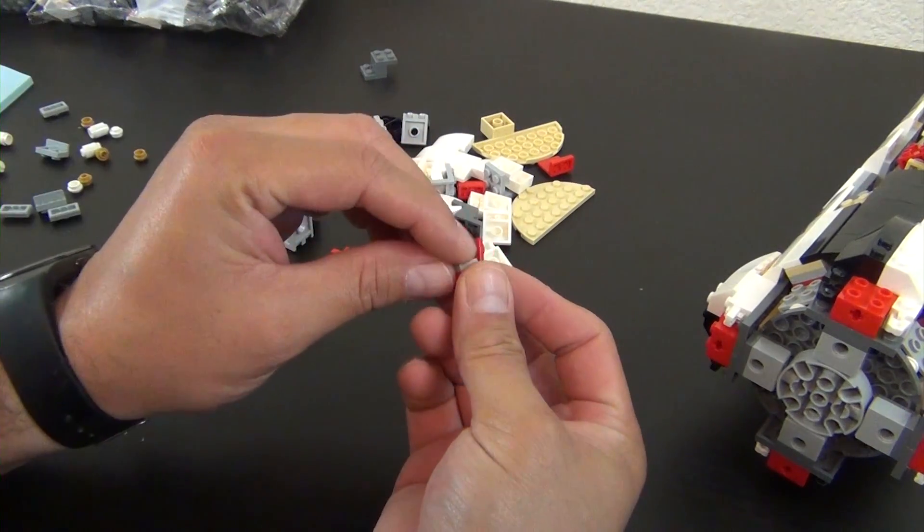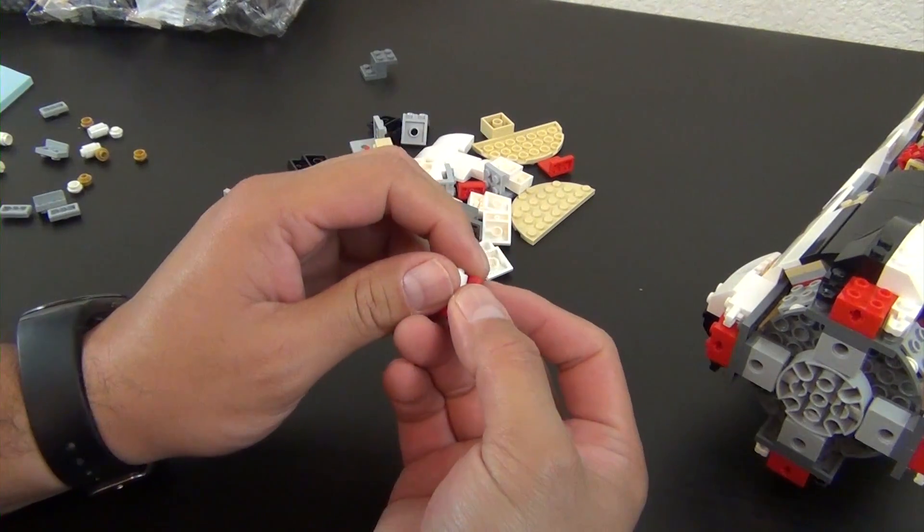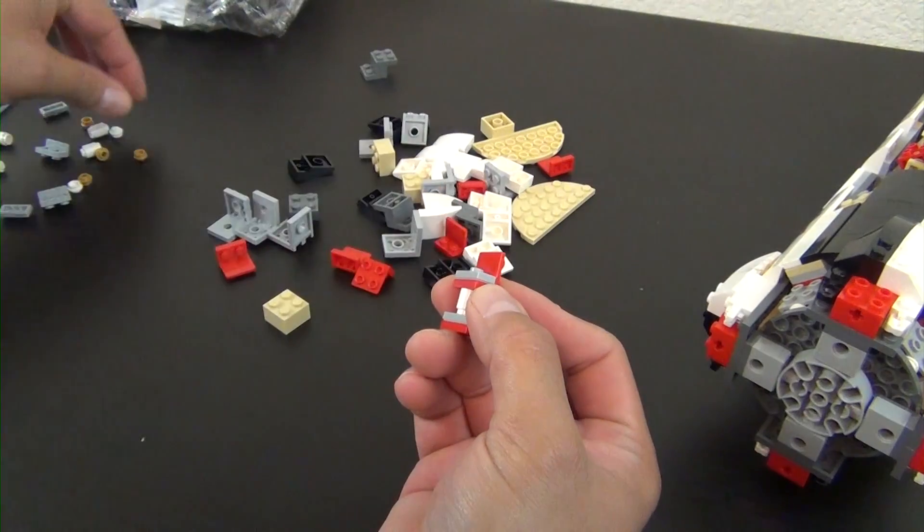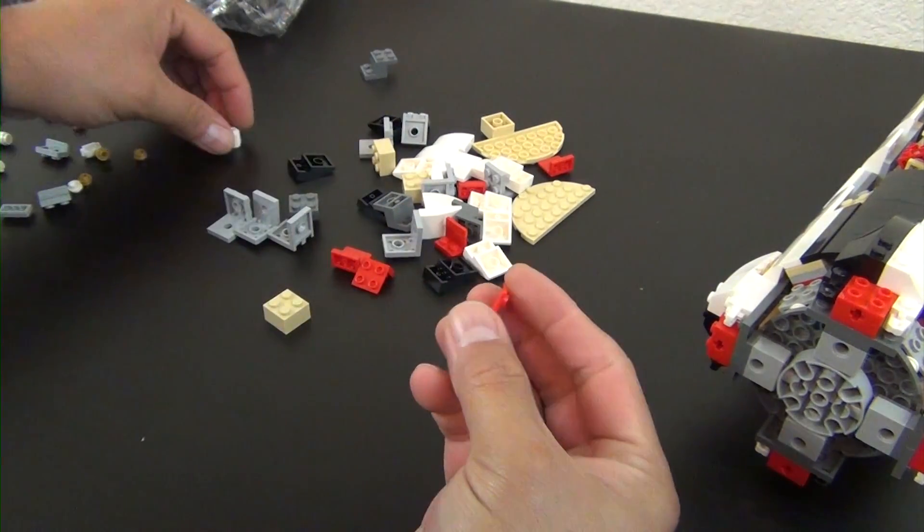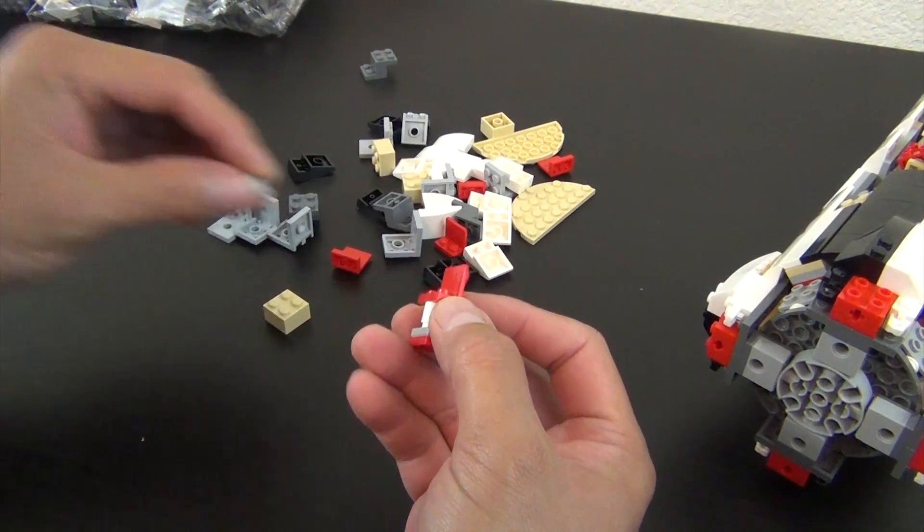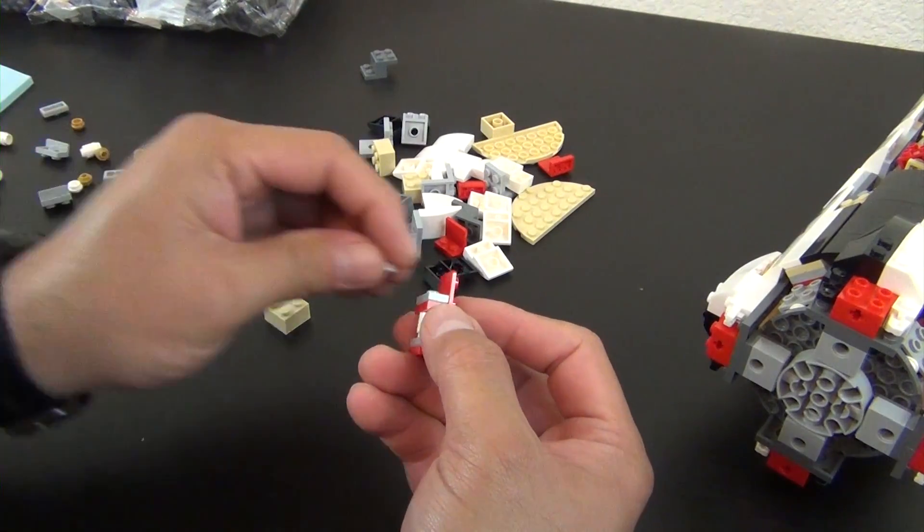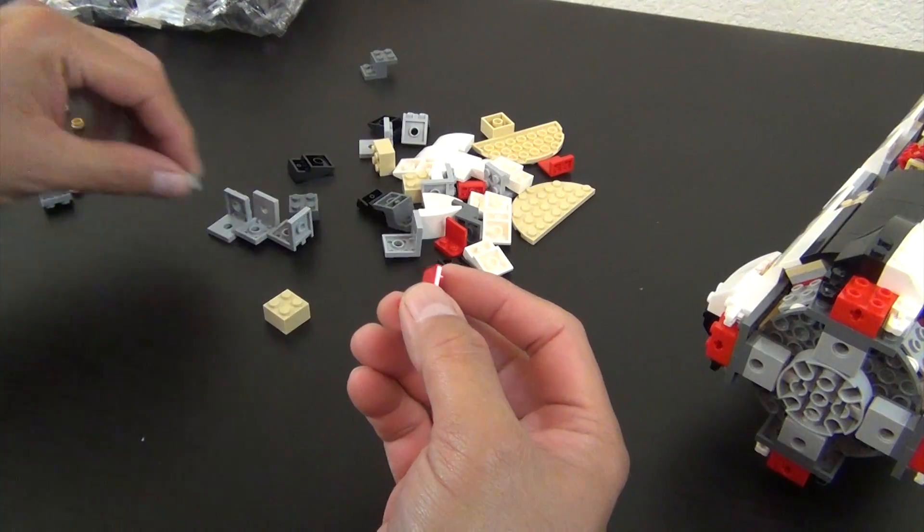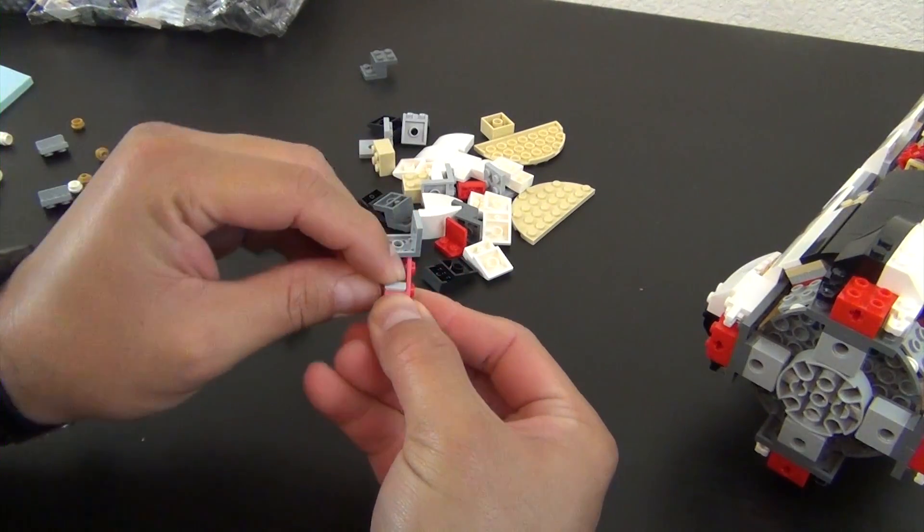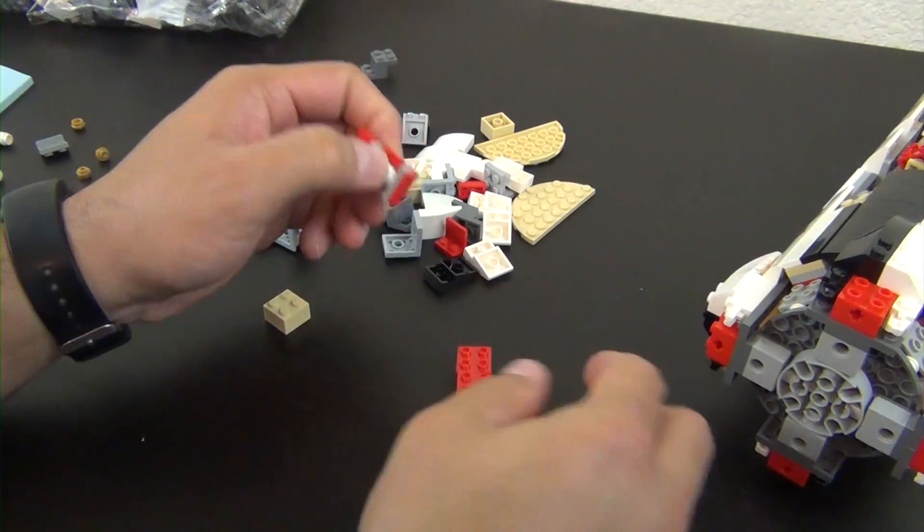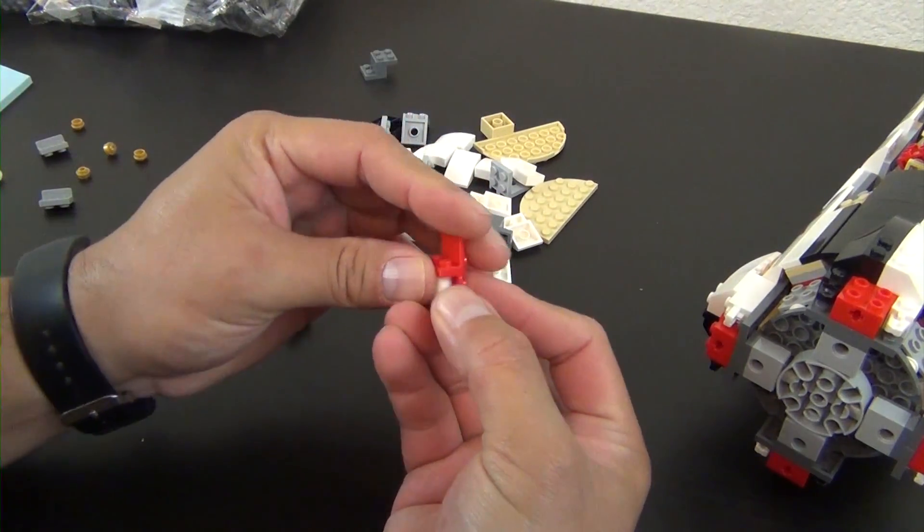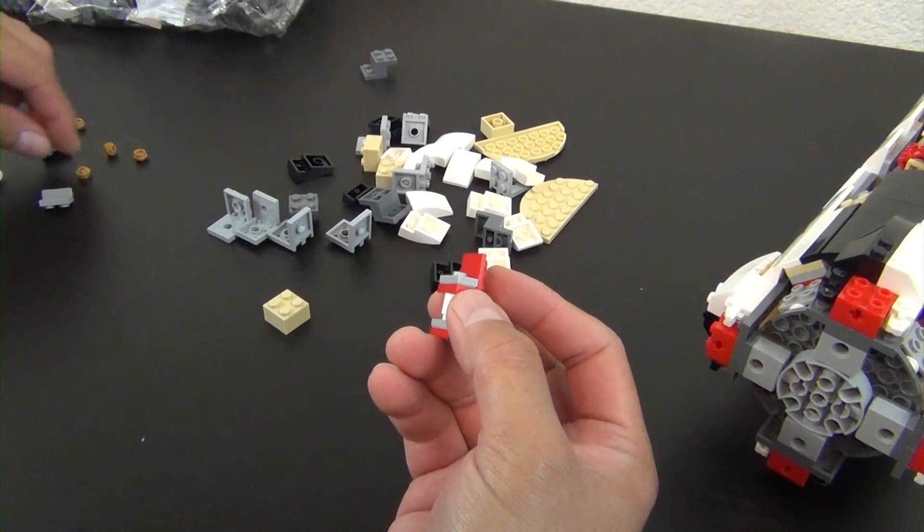We have some more of these red brackets, jumper tile, round brick, another bracket, jumper tile and a stud. And you guessed it, we're going to build four of those. All right, one more. I thought that was the last one. Wishful thinking, I guess. And there we go.